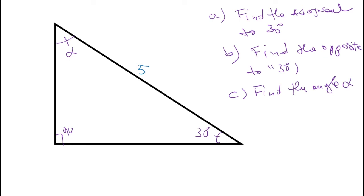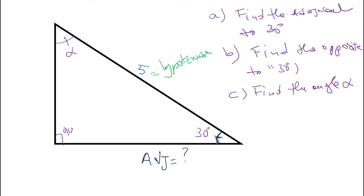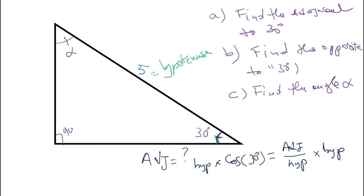If I have one angle and one side, I can find the other two sides and the remaining angle. This side is the hypotenuse. To find the adjacent to 30 degrees we use cosine. The cosine of the angle equals adjacent over hypotenuse, so multiplying both sides by hypotenuse gives adjacent = 5 × cos(30°) = 4.33.